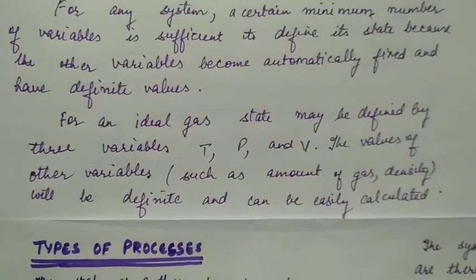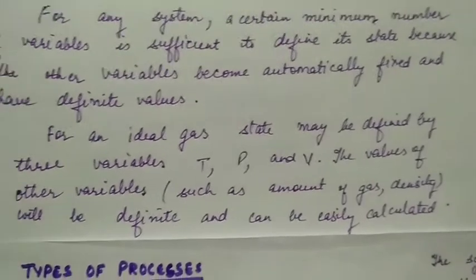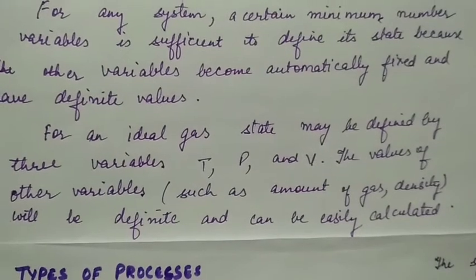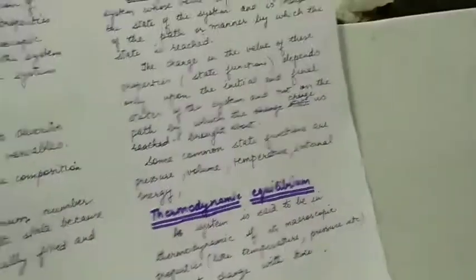For an ideal gas state, may be defined by its three variables: temperature, pressure, and volume. The values of other variables, such as amount of gas, density, will be definite and can be easily calculated.